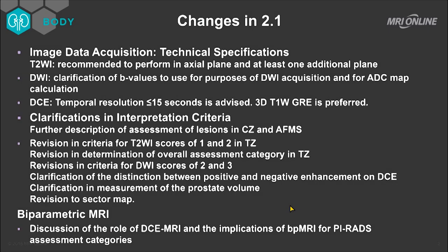Let's start with a review of the changes we'll be describing and breaking down. First, image data acquisition technical specifications. For T2 weighted imaging, it's recommended to perform the T2 in either a straight axial orthogonal plane and at least one additional plane. Diffusion weighted imaging includes clarification of B values for acquisition and ADC map calculation. For DCE or dynamic contrast enhanced MRI, we have to place an IV and inject. Temporal resolution should be no greater than 15 seconds — in our personal practice it's about seven to eight seconds per image per location. 3D T1 GRE is preferred.